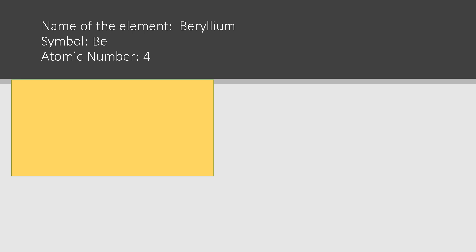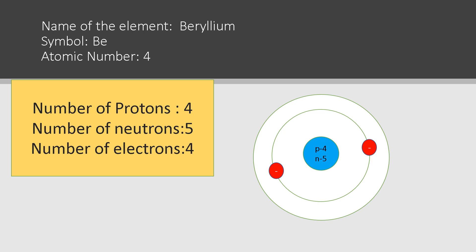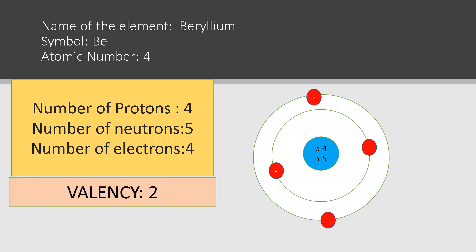Next we have beryllium. Symbol is Be, atomic number four, number of protons four, number of neutrons five, number of electrons four. The electronic configuration is 2, 2 — two in the first orbit and two in the second orbit. The valency is two. The last shell of the atomic orbital is also known as the valence shell.